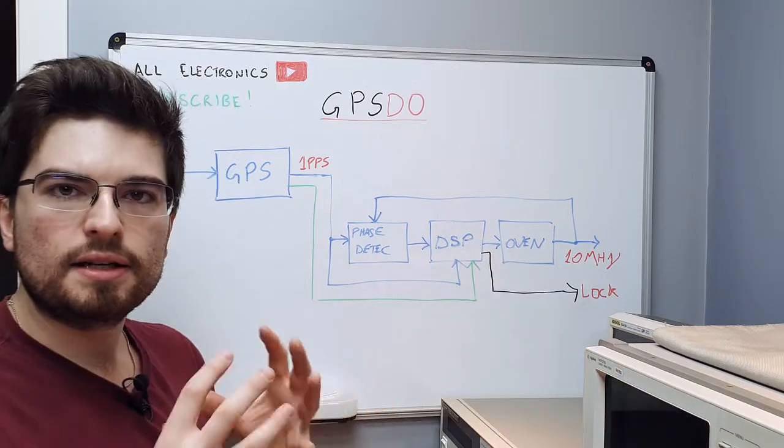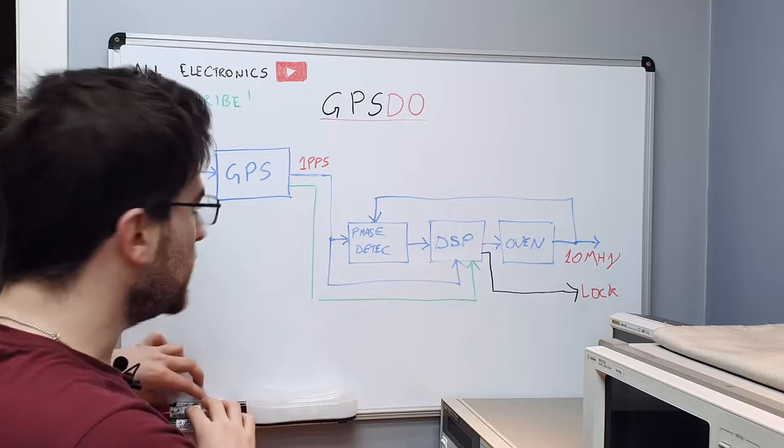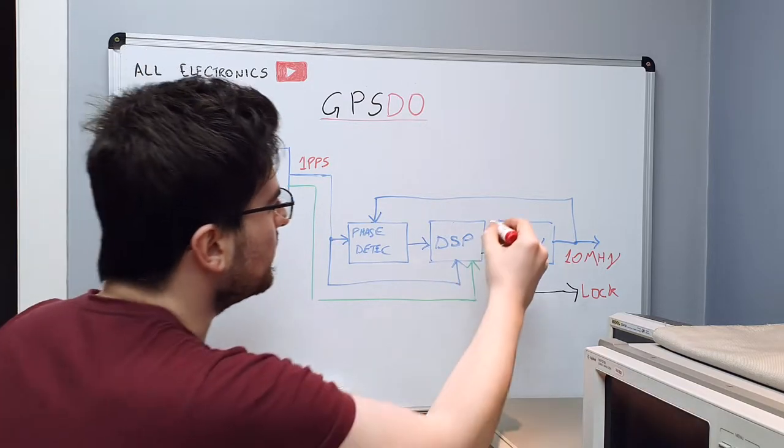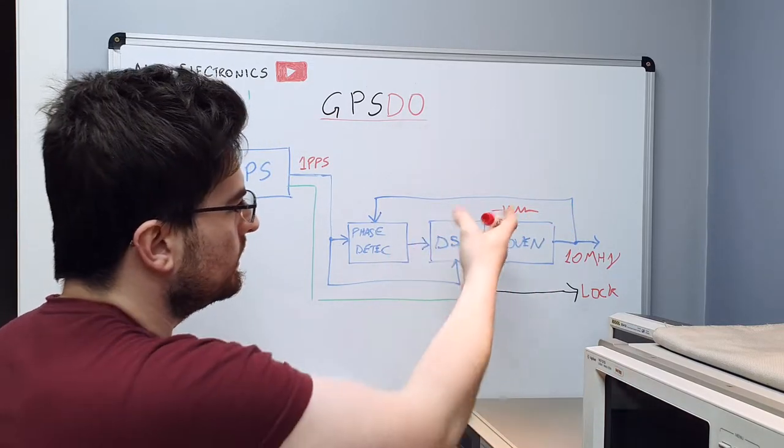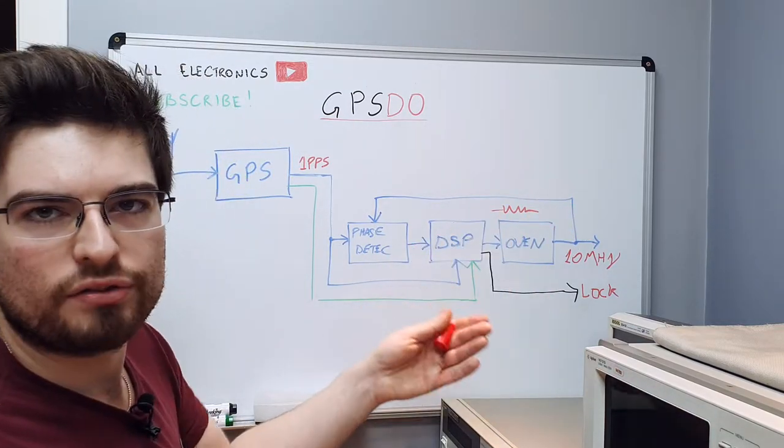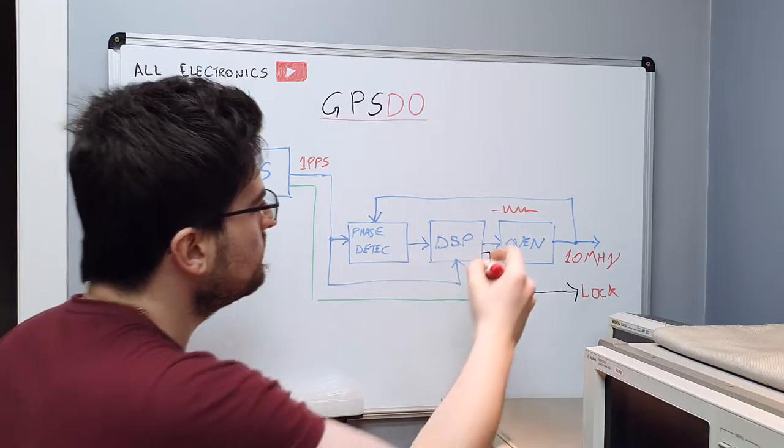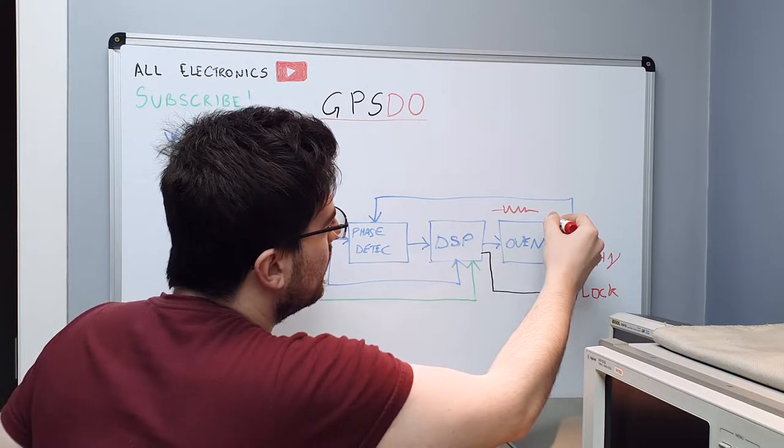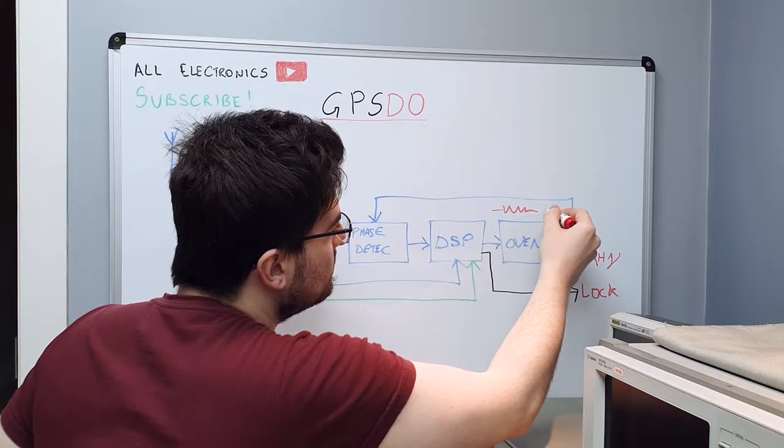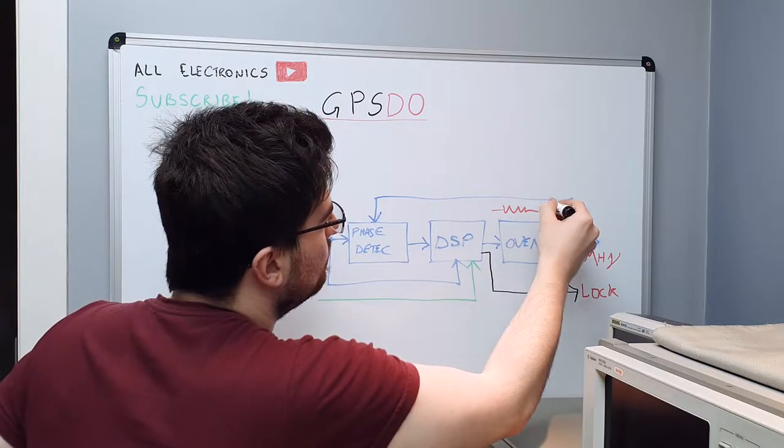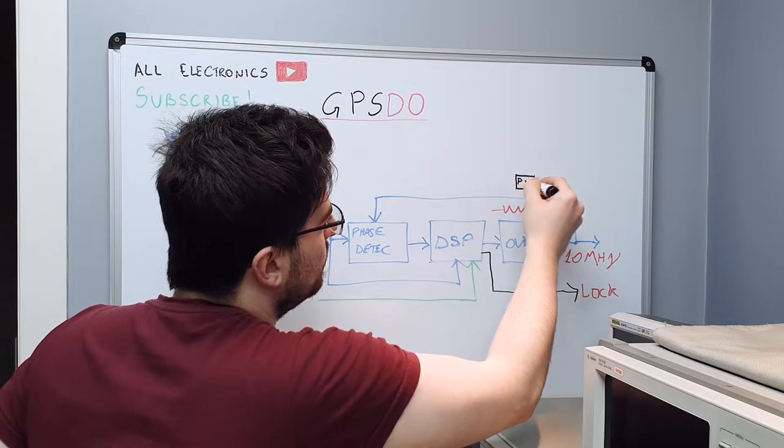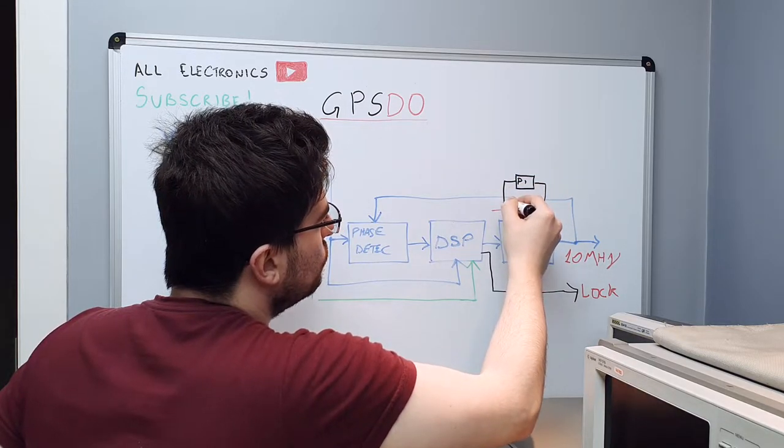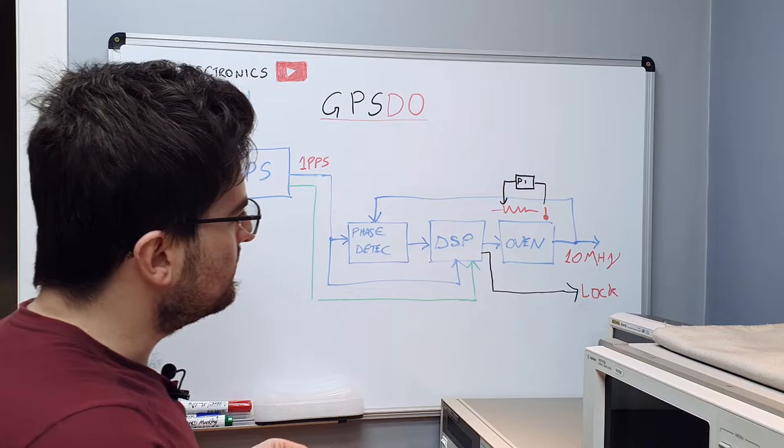The oven has an internal closed loop that we can draw here. That's basically a heater device, it's like a resistor or in this case probably is a MOSFET or a BJT device and you have a temperature sensor here and have a PI controller probably here.